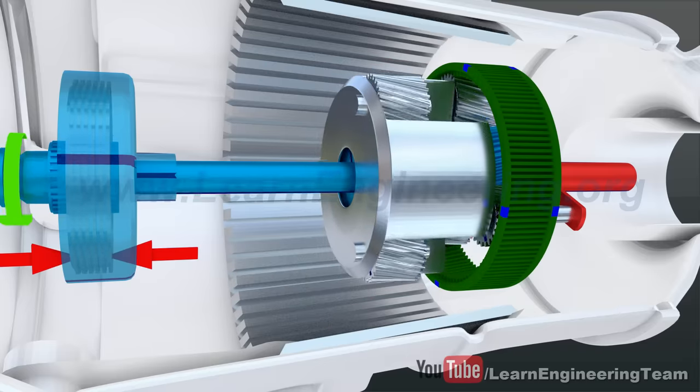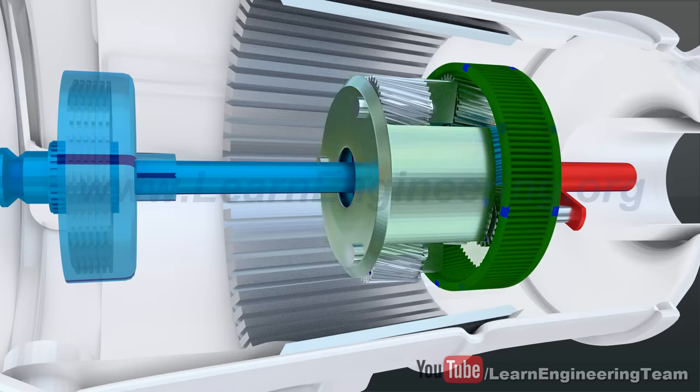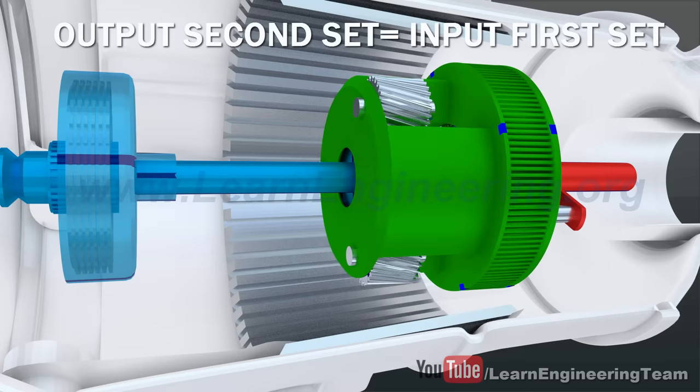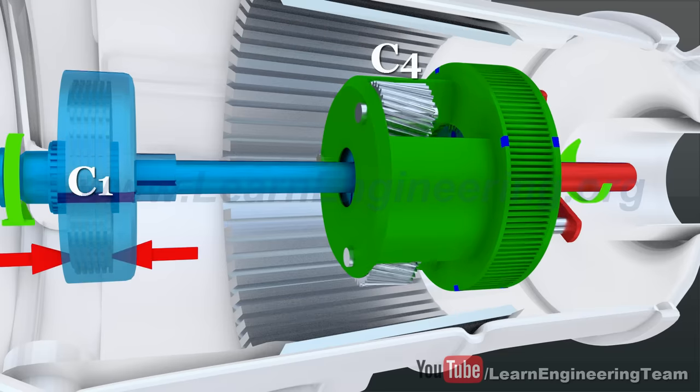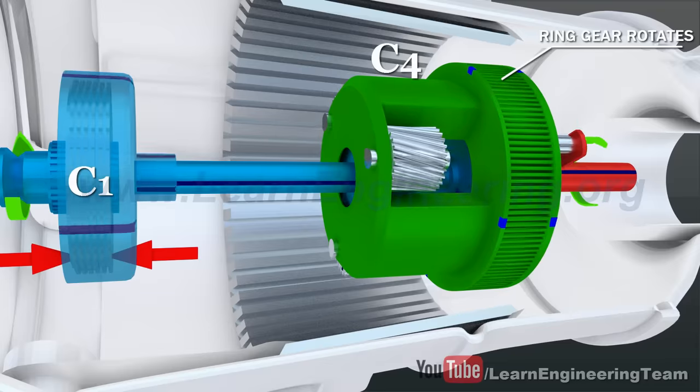But here's the tricky part. This planet carrier is permanently linked to the ring gear of the first set. So, when C1 and C4 are applied together, the ring gear of the output set will turn.